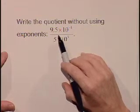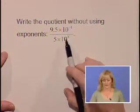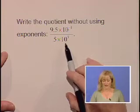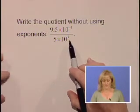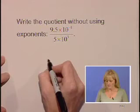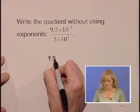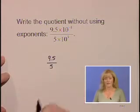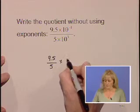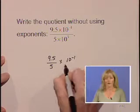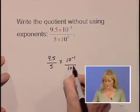Our third problem using scientific notation asks us to write the quotient without using exponents. Our original quotient is 9.5 times 10 to the negative 1 divided by 5 times 10 to the third power. We're going to separate these to 9.5 divided by 5 times 10 to the negative 1 divided by 10 to the third.